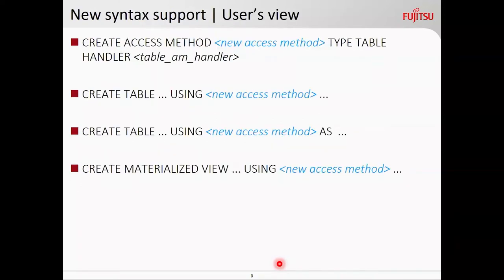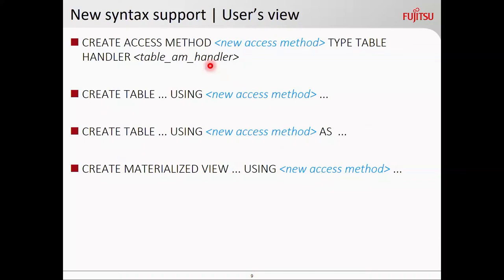From the user perspective, it's as simple as this: there is a USING clause with a new access method in CREATE TABLE and CREATE TABLE AS. There is also CREATE MATERIALIZED VIEW USING new_access_method, where the new access method is created using CREATE EXTENSION. At the end of the day, a user will just be doing a CREATE EXTENSION, and then using that access method while creating tables or materialized views.